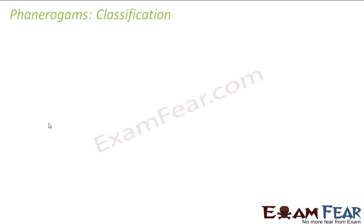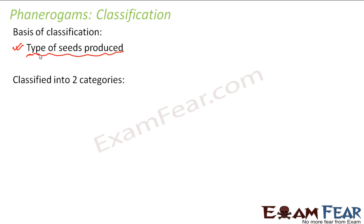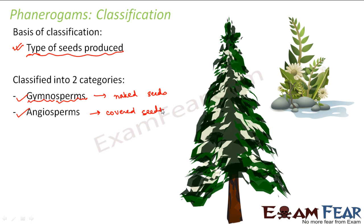There are two categories of plants based on what kind of reproductive structures they have. The basis of classification is the type of seeds produced. They were classified into two categories: gymnosperms and angiosperms. The word 'gymno' means naked and 'sperm' means seeds — so gymnosperms means naked seeds. Angiosperms means covered seeds. Those plants which produced naked seeds were gymnosperms, and those which produced covered seeds were angiosperms.